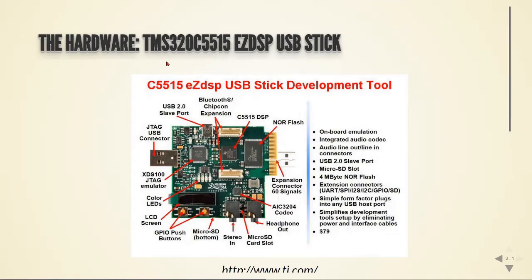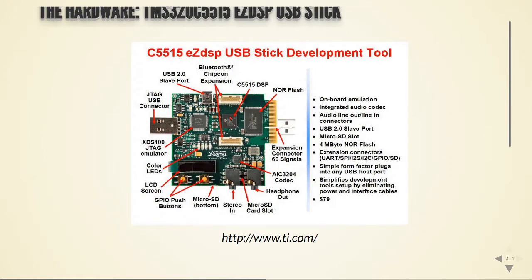So this is the TMS320C5515EZDSP USB stick. We have the C5515 DSP processor. It is a 16-bit fixed point processor. We are going to talk about this DSP later on. The memory is a NOR flash memory. We have here the audio codec. So we have a stereo in connector and a headphone out connector. We have a USB port and a JTAG emulator. We are going to power up this board using this USB port, and also we are going to program and debug using this JTAG emulator through this USB port.